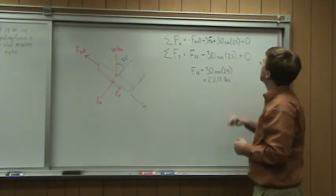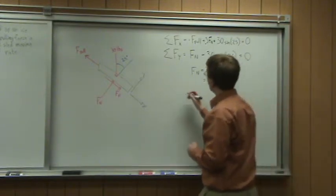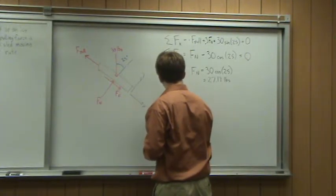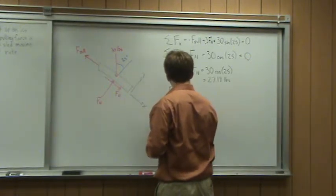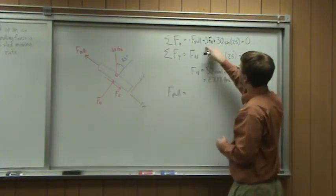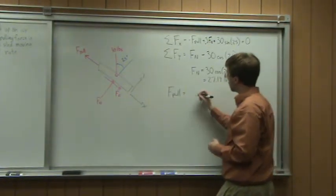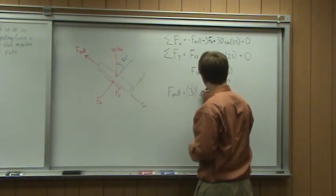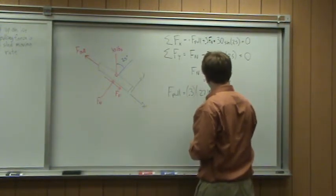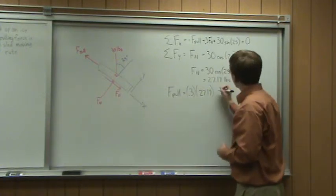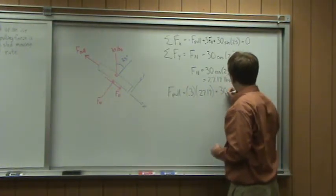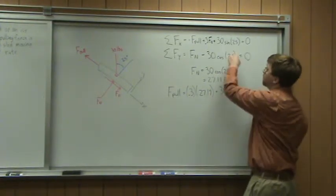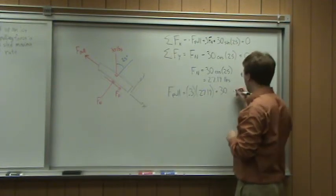Now I can go up here and plug that in. F pull is going to be equal to 0.3 times my normal force plus 30 times sine 25. This is the component of my gravity force.